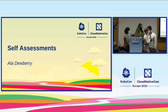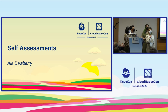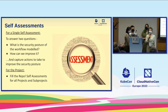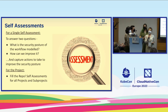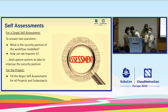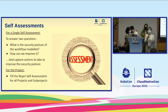I'm Ala Dewberry, a product line manager at VMware, and I'm going to talk about self-assessments, a subproject I lead. For a single self-assessment, the goal is to answer two questions: what is the security posture of the workflow we're looking at, and how can we improve it? We capture action items to close the gap between the security posture we have now and the one we want to achieve. For the subproject as a whole, it's about doing as many self-assessments across the Kubernetes code base as possible.